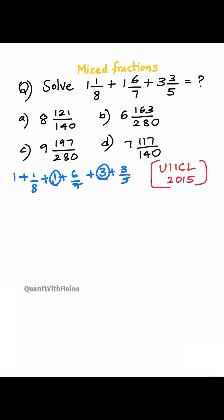3 plus 1 plus 1 is 5. Now we are left with fractions 1/8 plus 6/7 plus 3/5.